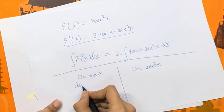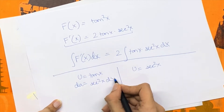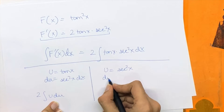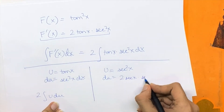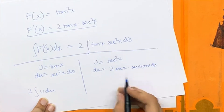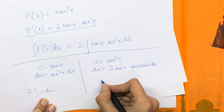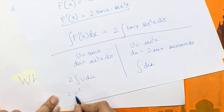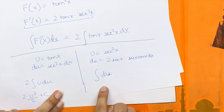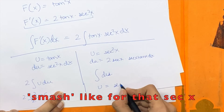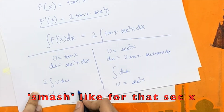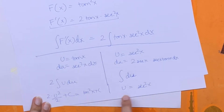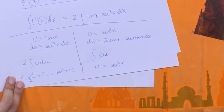For method one: du = sec²(x) dx, so the integral becomes 2∫u du. For method two: du = 2·sec(x)·sec(x)·tan(x) dx, which is exactly our integrand, so it becomes ∫du. Solving method one gives 2·(u²/2) + C = u² + C = tan²x + C. Solving method two gives u + C = sec²x + C. Without the +C, tan²x and sec²x are not the same function, so we'd have different answers to the same integral.